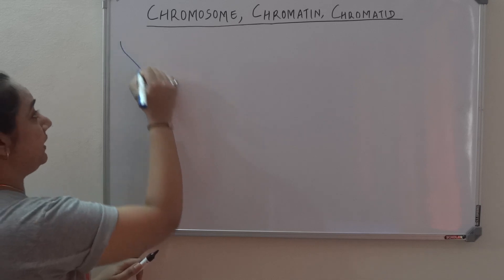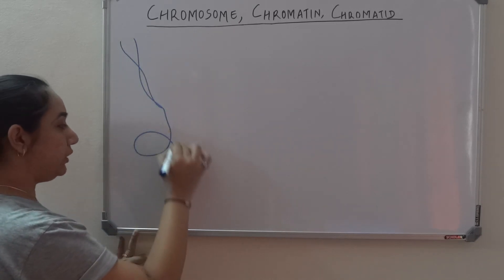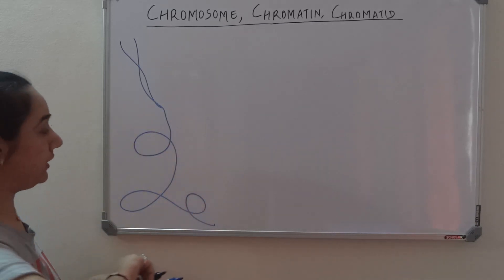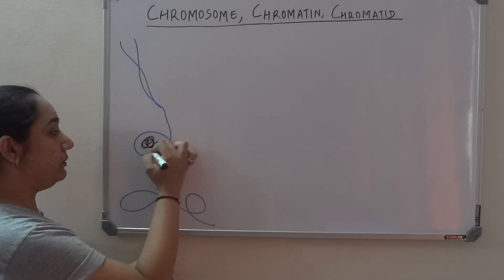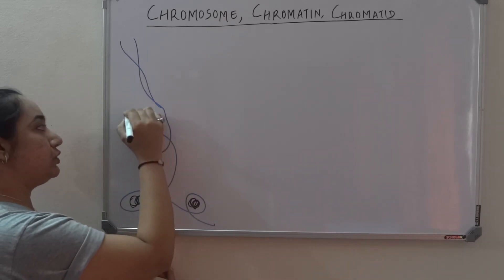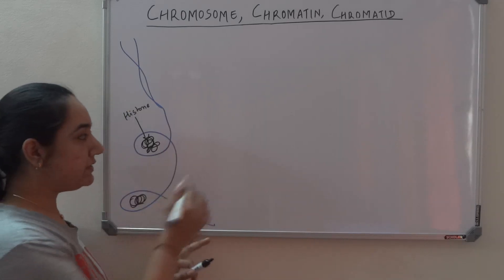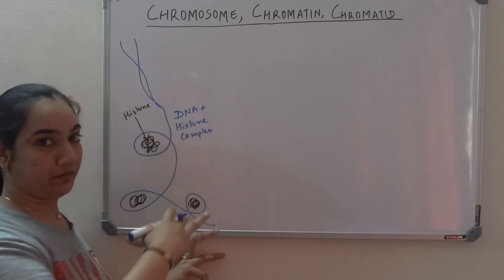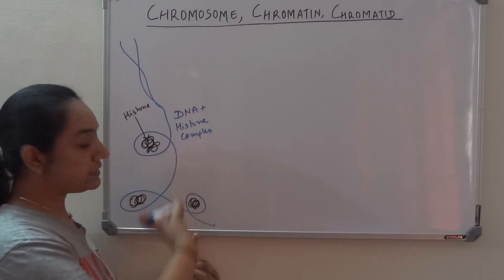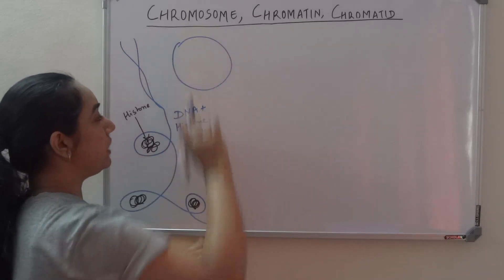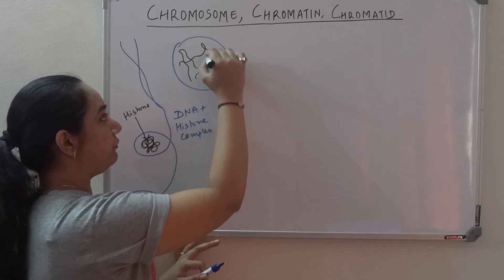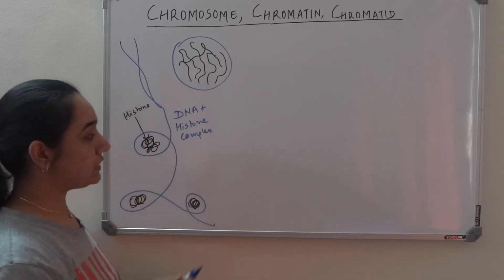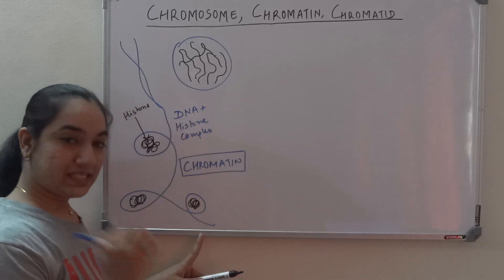We have a double-stranded DNA that would wrap around histone proteins — these are histones. This particular assembly where you have DNA and histone, DNA plus histone, looks like a thread. DNA is not yet condensed, so this looks like a thread when you observe it under the light microscope — you will see something like thread-like DNA everywhere.